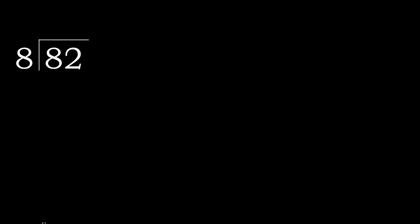82 divided by 8. 8 is not less, therefore start with 8. Here, 8 multiplied by which number is nearest to 8 but not greater? 8 multiplied by 2 is 16, which is greater. Multiplied by 1 is 8 — not greater. 8 minus 8 is 0.